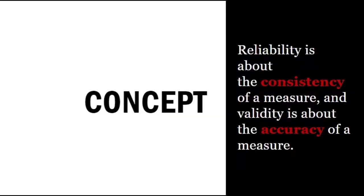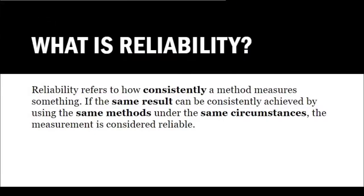The main concept: Reliability is about the consistency of a measure, and Validity is about the accuracy of a measure. The same result can be consistently achieved by using the same method under the same circumstances — that measurement is considered reliable.